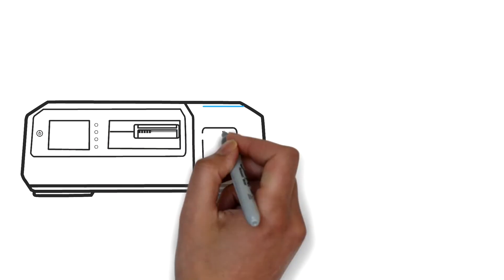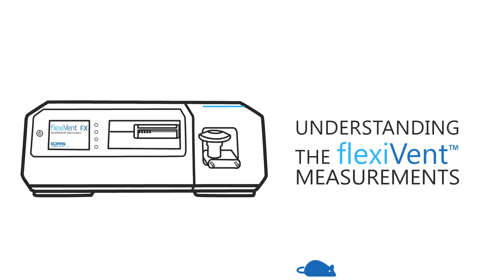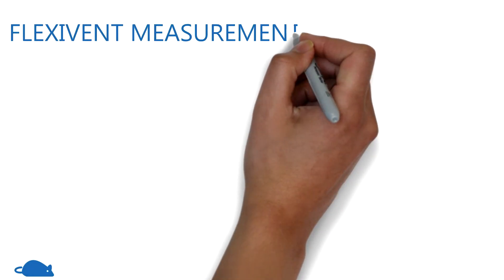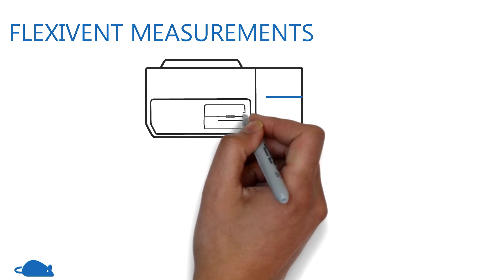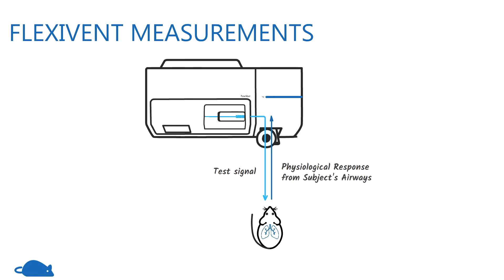The following video will provide a brief overview of the flexiVent manoeuvres and outcomes. The flexiVent uses an active measurement technique. Using this technique, test signals are introduced to the subject's airways, and through changes in pressure, volume, and flow, the mechanical properties of the respiratory system can be measured.